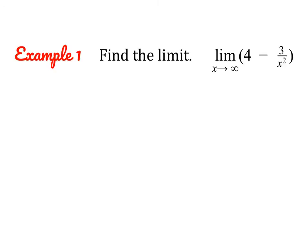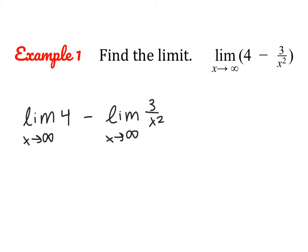So let's evaluate this first limit. Here we have two separate terms, so we're going to use one of our properties of limits and evaluate them separately — you can do this whenever we have a sum or difference. We find the limit as x approaches infinity of 4, then subtract the limit as x approaches infinity of 3 over x squared. The limit of 4 is just 4 — it's a constant function. The second limit has a larger degree in the denominator, so it approaches 0. So 4 minus 0 equals 4.